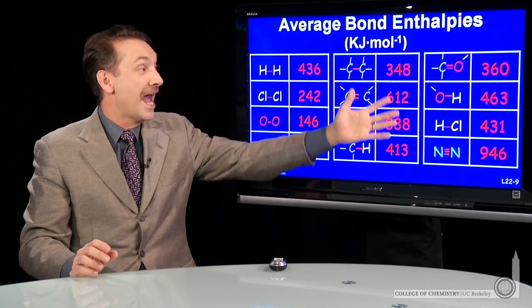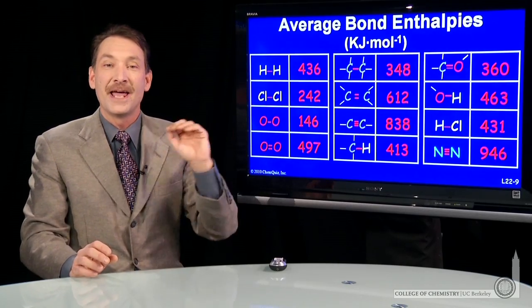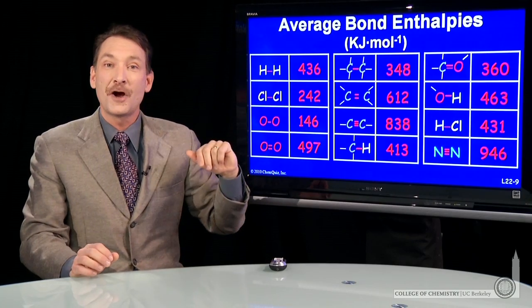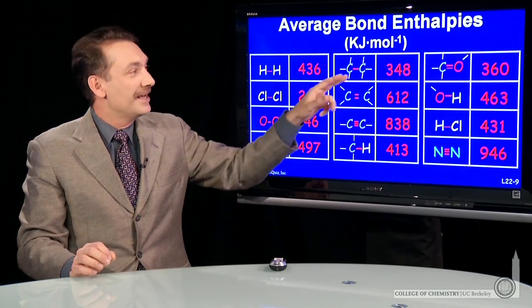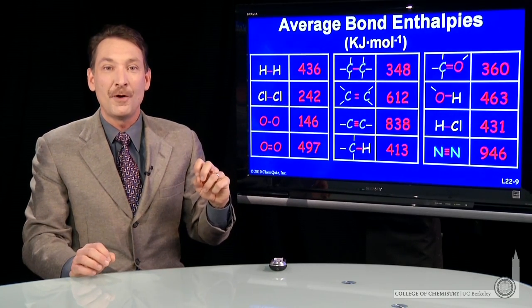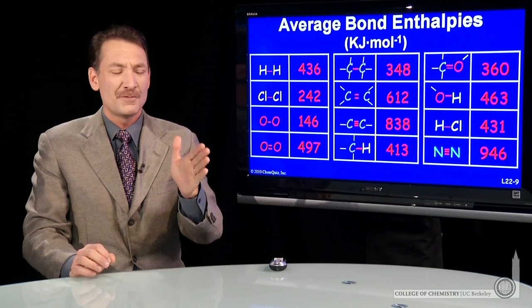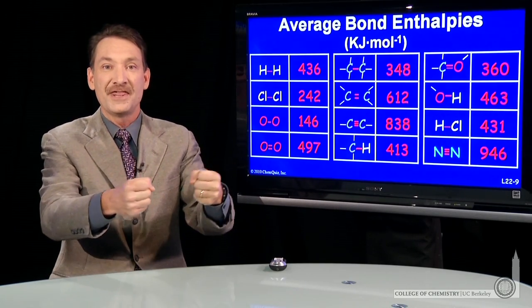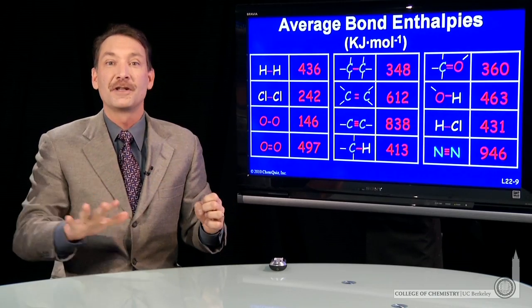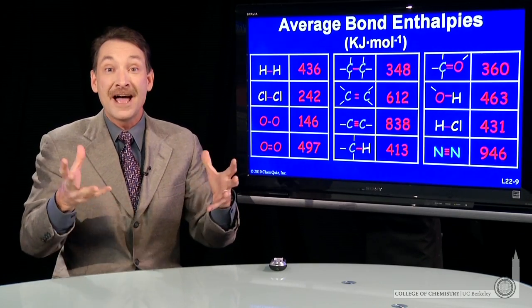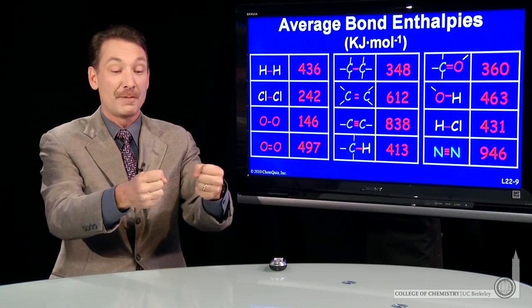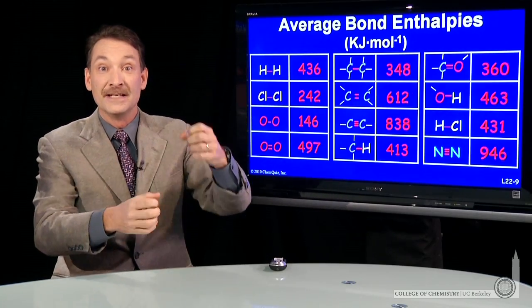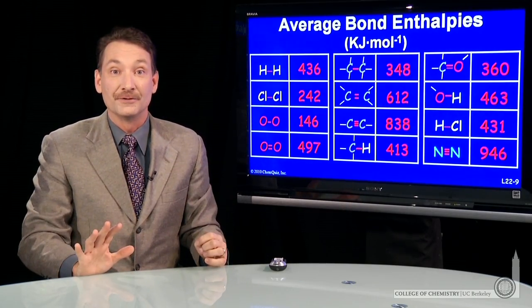Here I've calculated average bond enthalpies. I say average bond enthalpy because this carbon-carbon single bond — 348 kilojoules per mole — doesn't represent the exact bond enthalpy for, say, the carbon-carbon bond in ethane. It's an average over a lot of molecules: the average carbon-carbon bond in ethane, butane, benzene, over a wide variety of molecules.